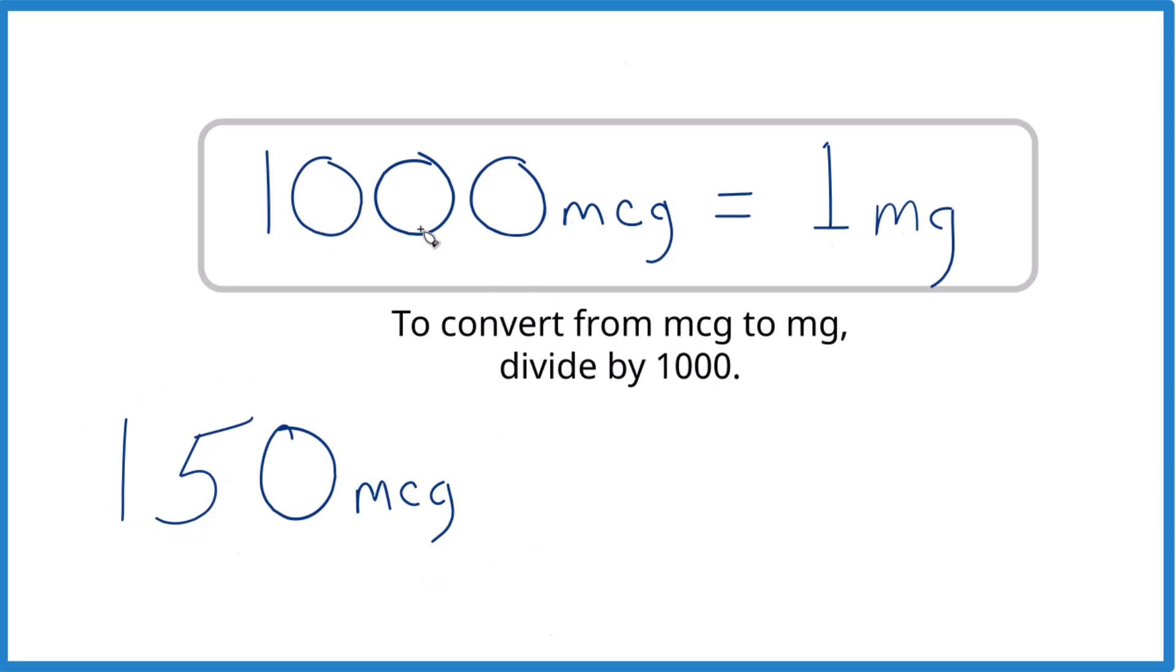What you need to know is that there are 1,000 mcg in 1 mg, so 1,000 micrograms in 1 milligram. When we go from micrograms to milligrams, we just divide by 1,000.